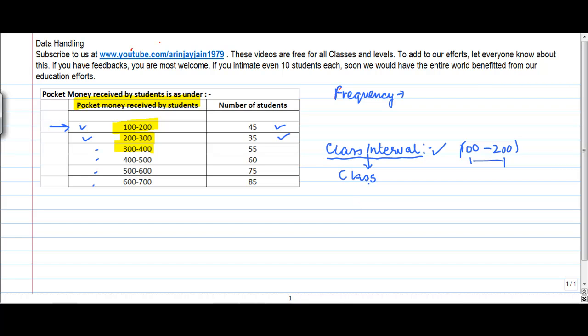So class interval is basically the difference or the range between any two numbers which are given within which a particular group of people is expected to fall. So number of students falling within hundred and two hundred, so hundred to two hundred is itself a class.